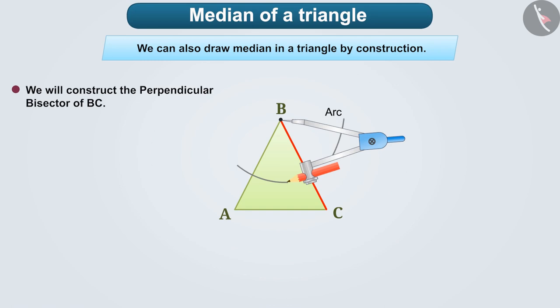Without changing the radius taken in the compass, assuming point C to be the center, we will draw an arc over the side BC which will intersect the arc formed with point B at point D.